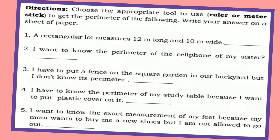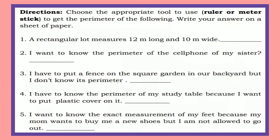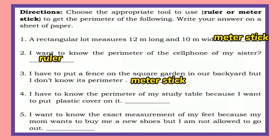How about this activity? Directions: choose the appropriate tool — ruler or meter stick — to get the perimeter of the following. It's time to check your work. Number one: meter stick. Number two: ruler. Number three: meter stick. Number four: ruler. And number five: ruler.